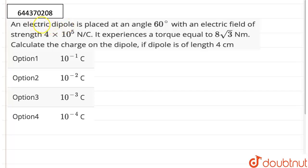Hello, so the question here is: an electric dipole is placed at an angle 60 degrees with the electric field of strength 4×10^5 Newton per coulomb. It experiences a torque equal to 8√3 Newton meter. Calculate the charge on the dipole if the dipole is of length 4 centimeter. And our options are 10^-1 coulomb, 10^-2 coulomb, 10^-3 coulomb and 10^-4 coulomb.